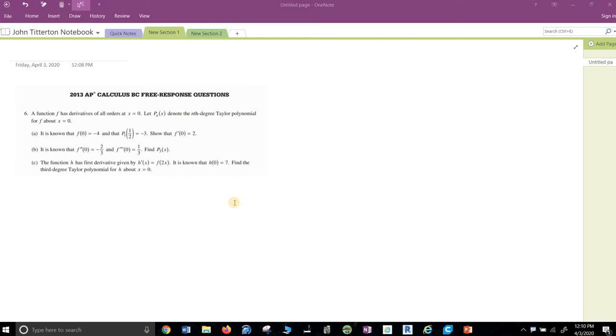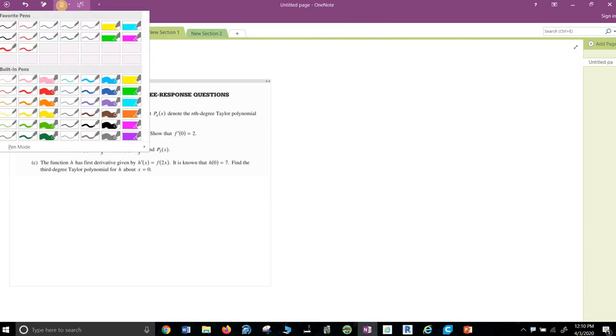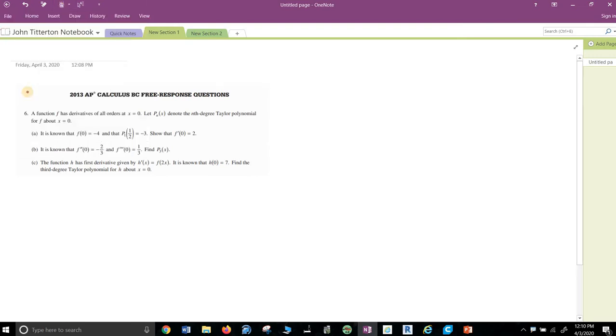Alright, a couple of FRQs for you. 2013 number six, which means it's an infinite series, which I'm going to guarantee you're going to have an infinite series question on this year's exam. And it will have other aspects to it. It'll have a linearization piece to it or a Euler's method to it, something like that. So this one is from long enough ago that they don't really build them like this anymore.